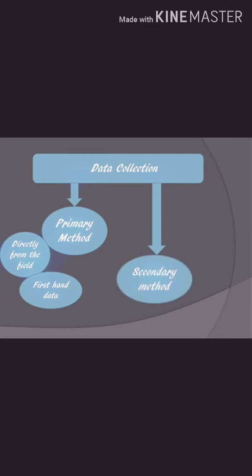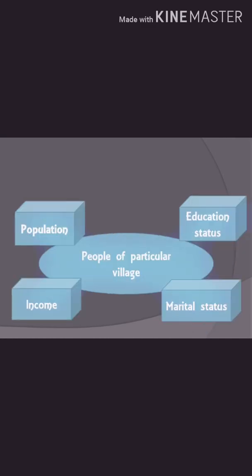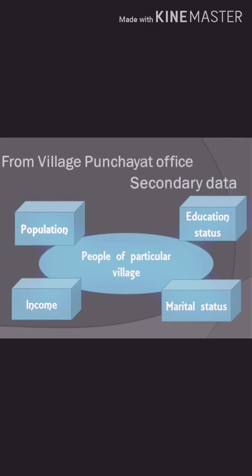Coming to secondary data collection: here you collect information from someone who had already collected the data — this is second-hand data. For example, if you collect that same information from the village panchayat office, that becomes secondary data collection. Secondary data can be found from newspapers, different websites, journals, and publications. For instance, gold price data and stock market details are available on websites. To make it clearer: if I collect your contact number by asking you directly, that is primary data; if I collect it through your friend, that is secondary data.